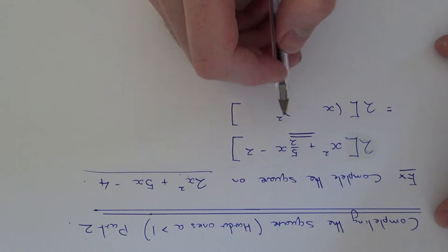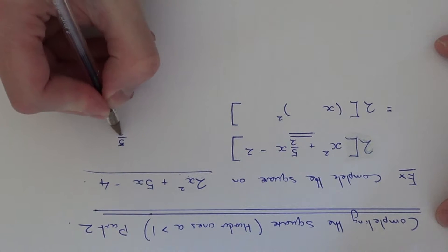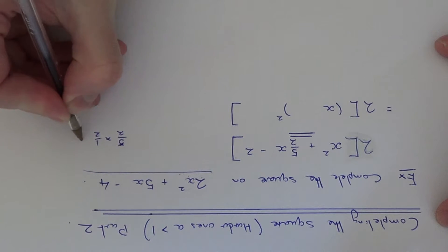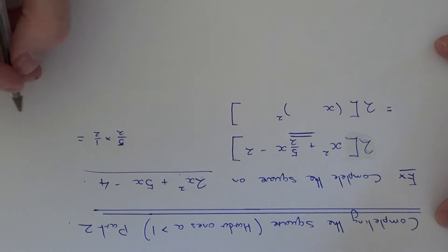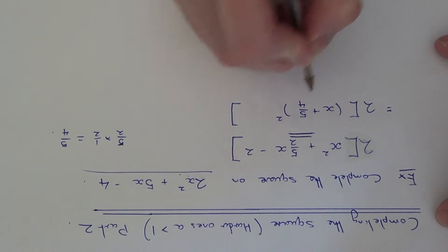So we need to half 5 over 2. What you can do is just times 5 over 2 by a half. This is the easiest way of doing it and that will give us 5 over 4. So that is your value of p which goes there.